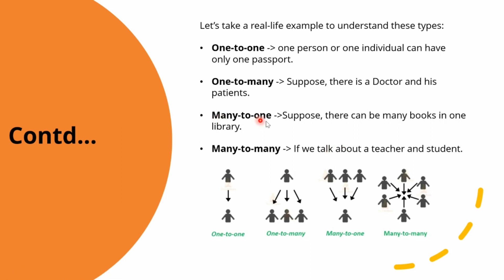The next one is many-to-one. For example, there can be many books in one library, and each book is associated with that library and cannot be part of another library. So many books are related to one library — this is a perfect example of a many-to-one association between books and a library.